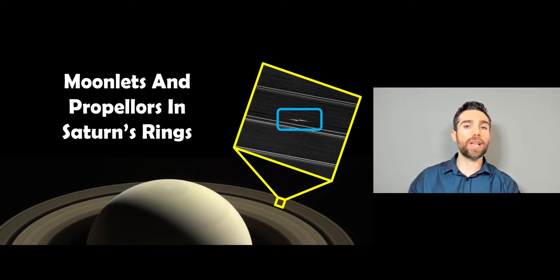Welcome to this video, where I want to have a look at propeller-like structures in the rings and how they relate to small moons, which we would call moonlets.